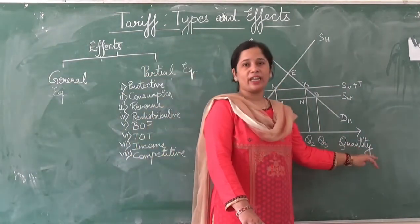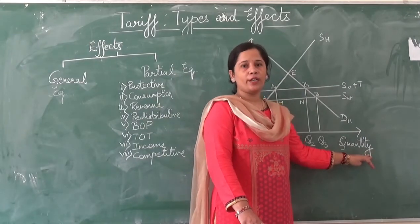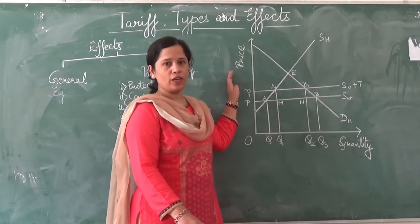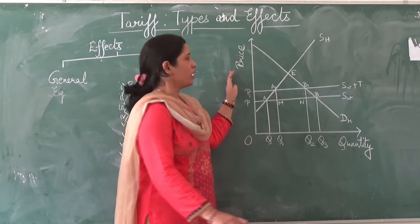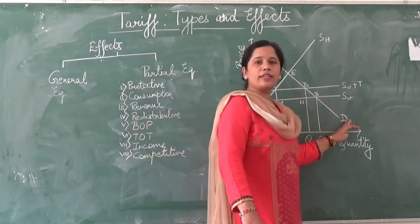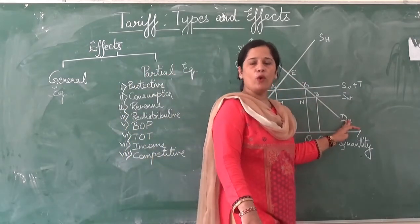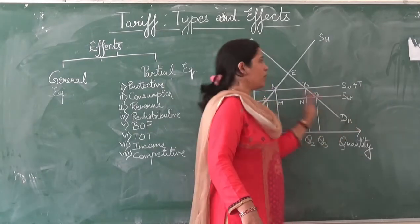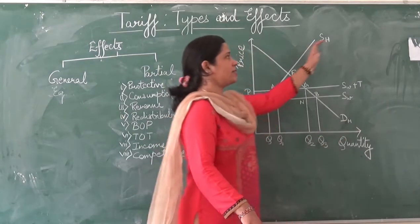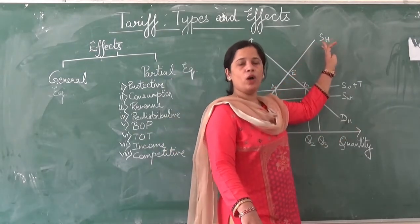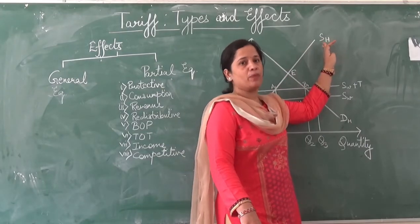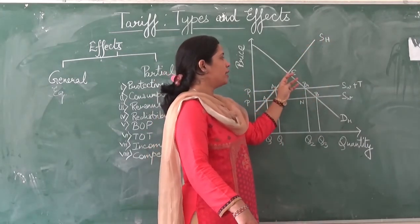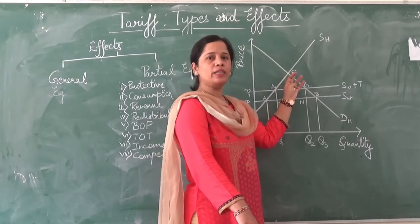On the x-axis I have taken quantity of a commodity and on the y-axis I have taken price of a commodity. DH is the demand curve of the home country — that is, the tariff-imposing country. SH is the supply curve of the home country. The equilibrium will be here at point E.